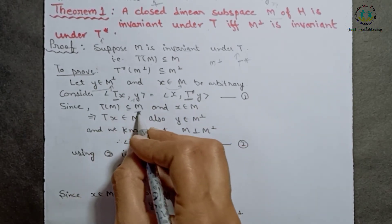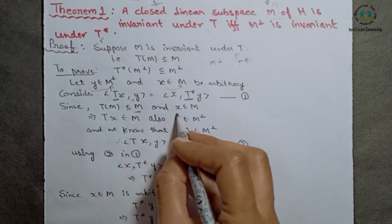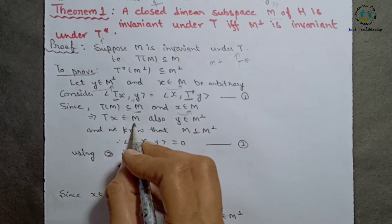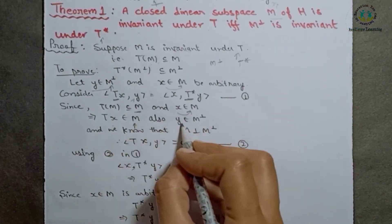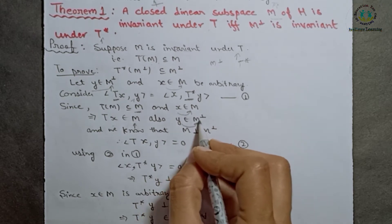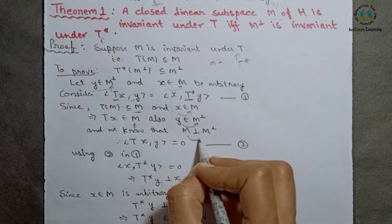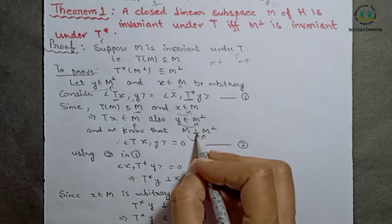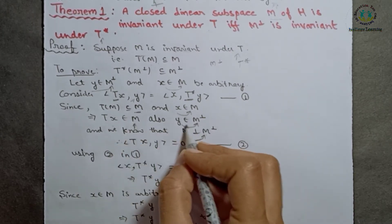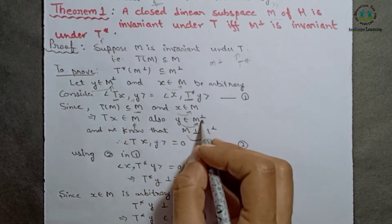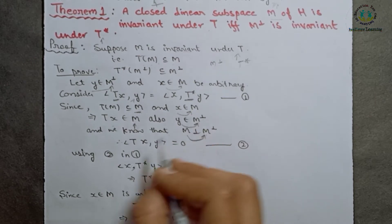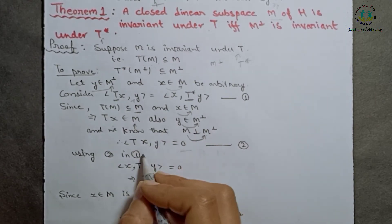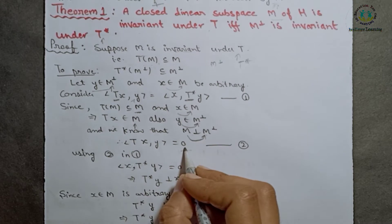Since T(M) is a subset of M, and x is an element of M, Tx belongs to M. Also, y belongs to M orthogonal. Since M and M orthogonal are always perpendicular to each other — one element from M and another from M orthogonal are perpendicular — their inner product equals 0. So the inner product of Tx with y is 0.